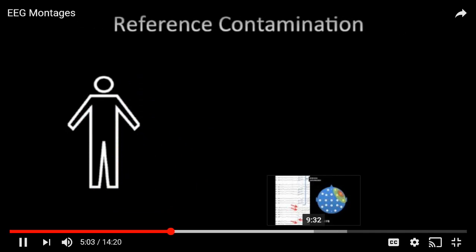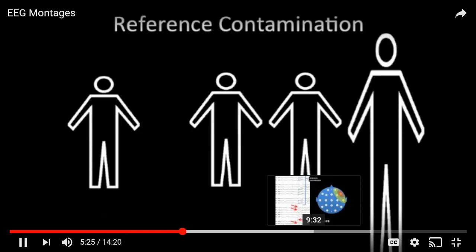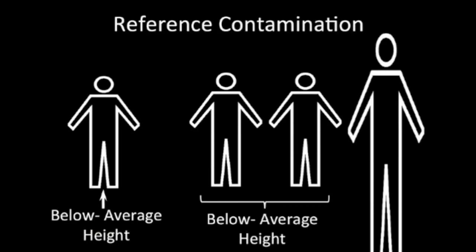One main consideration with average reference montage is reference contamination. To conceptualize this: if we compare an average-sized man to a group of other average-sized men, we say he is of average height. But if one man in the comparison group is much larger, we would conclude our man is below average height — an effect of the outlier that has nothing to do with our man. This makes all other men in the group appear below average, which can be very misleading.